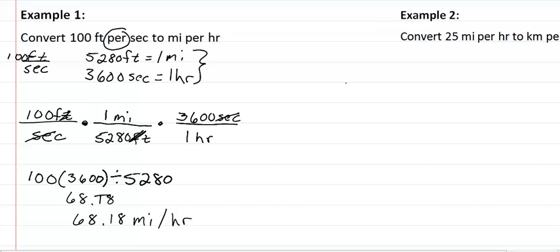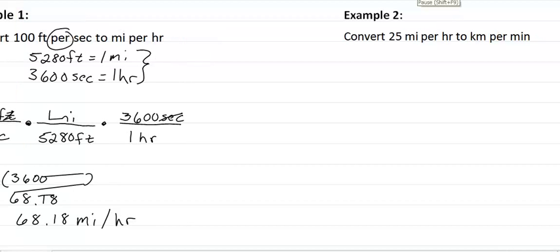Let's take a look at example two. In example two, we are converting miles per hour to kilometers per minute. So we want to start with miles, and we want to get that to kilometers.